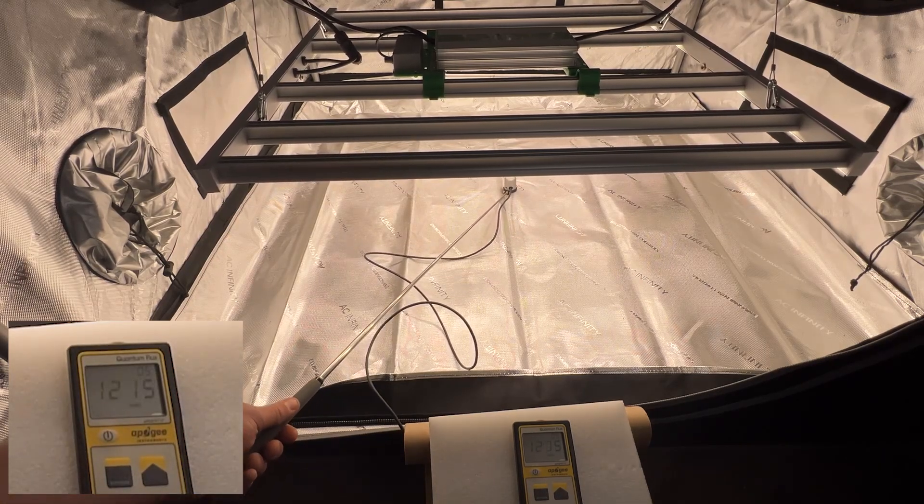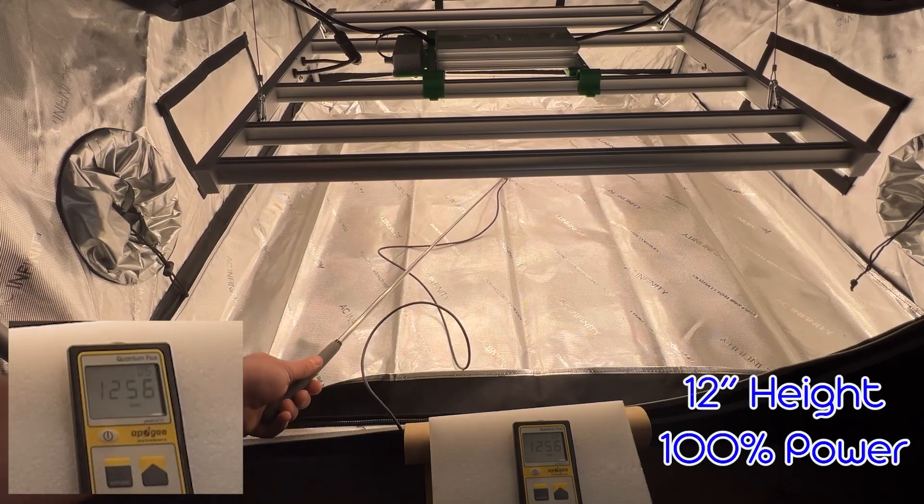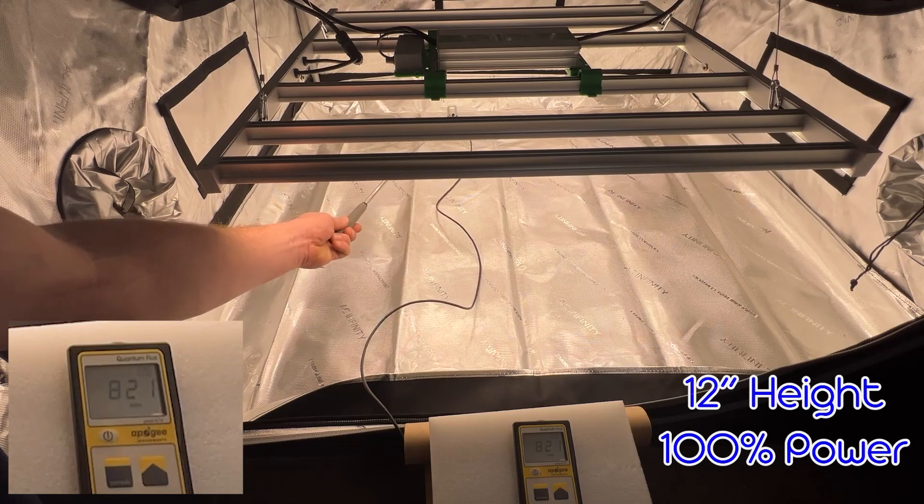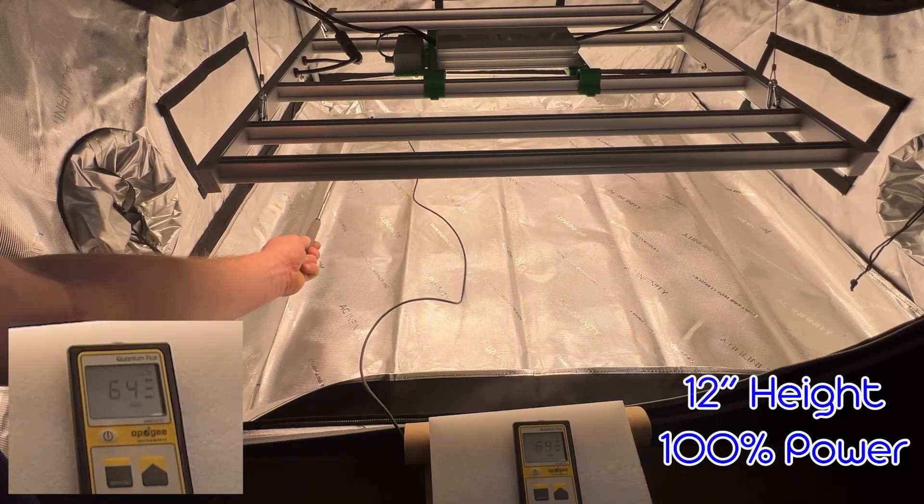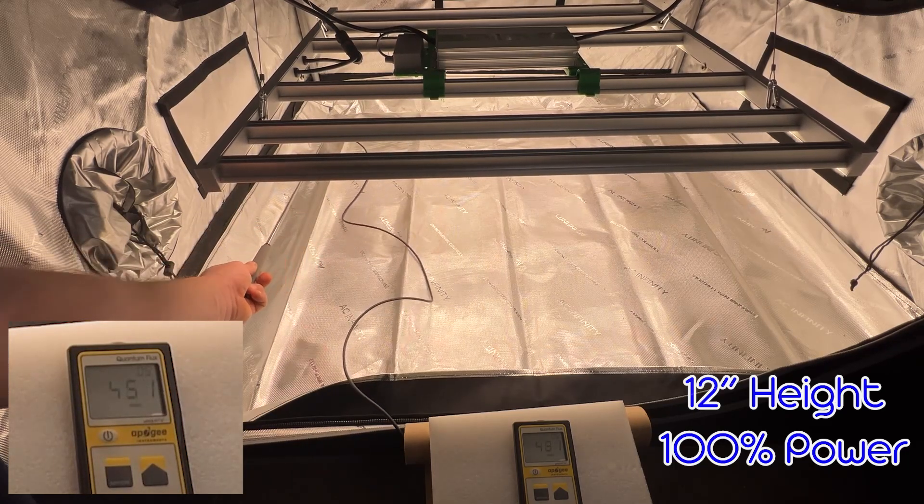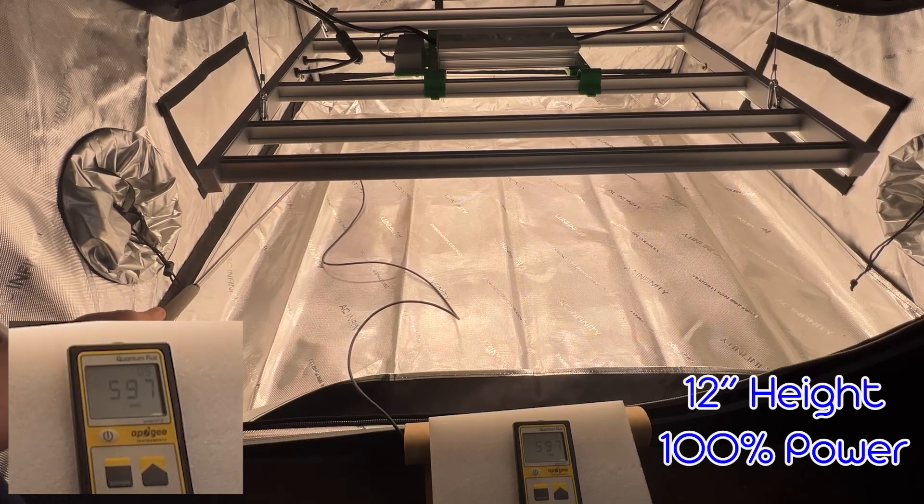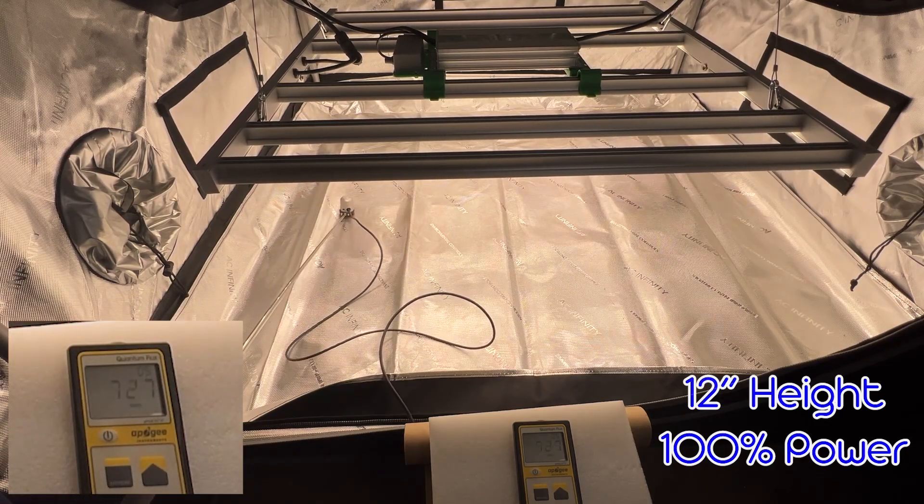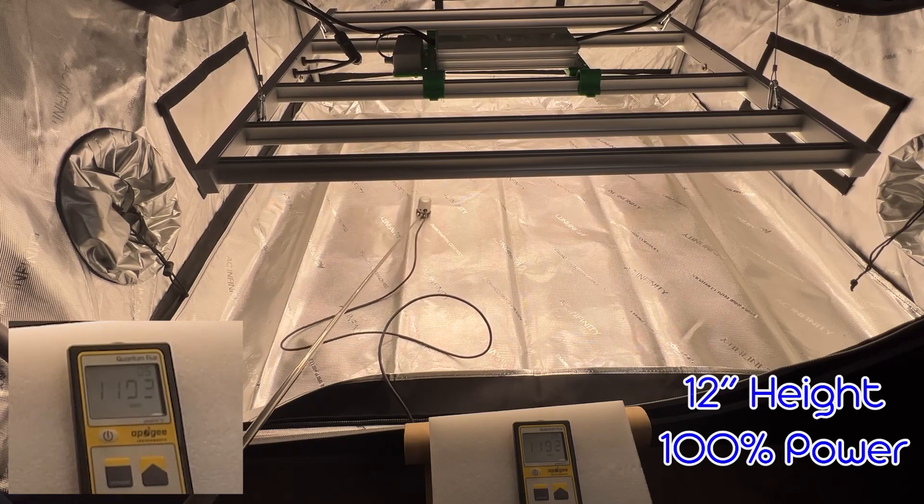And checking out our final measuring height, it's 12 inches at 100% power. We're seeing around 800 to 600 on the sides, dropping all the way down to about 450 in the corners. And then once you get back to that middle area, you can definitely see readings around 1200.